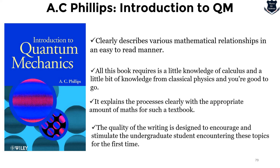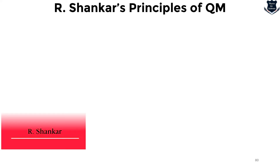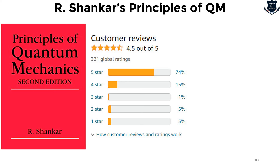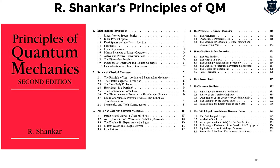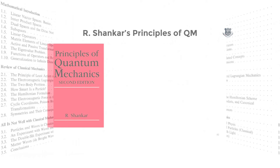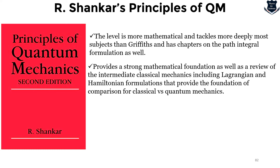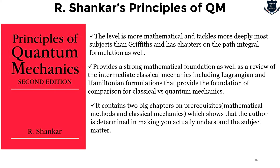I would also recommend R. Shankar's Principles of Quantum Mechanics. The book starts with a mathematical introduction covering the mathematics you need in the first 57 pages, then reviews classical mechanics. It provides a very strong mathematical foundation as well as a review of intermediate classical mechanics — and the author discusses path integrals and symmetries early on, unlike other textbooks that leave path integrals aside. Introducing symmetries helps keep them at the back of our mind, so they are not foreign concepts.